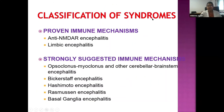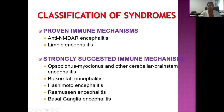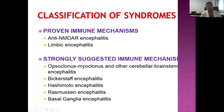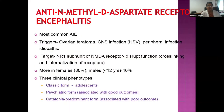Under the umbrella of autoimmune encephalitis, there are different subtypes. Those with proven immune mechanisms include anti-NMDA receptor encephalitis and limbic encephalitis. Those with strongly suggested immune mechanisms include opsoclonus-myoclonus, Bickerstaff brainstem encephalitis, Hashimoto encephalitis, Rasmussen's encephalitis, and basal ganglia encephalitis. Possible immune mechanisms include CLIPPERS, ROHHAD, PMP, and ophthalmoplegic migraine.